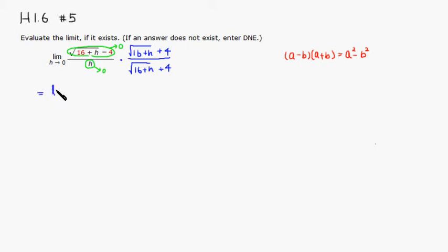So you have the limit as h approaches 0. When you multiply them together, we're going to have a squared. So if you square that, you're just going to get 16 plus h minus b squared, which would be 4 squared, so that's 16. And on the bottom, you can't really do too much, so I'll just say h times square root of 16 plus h plus 4.